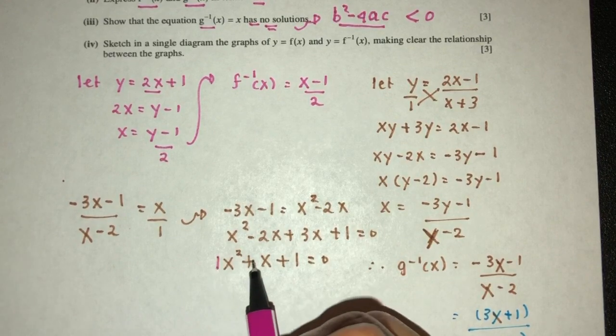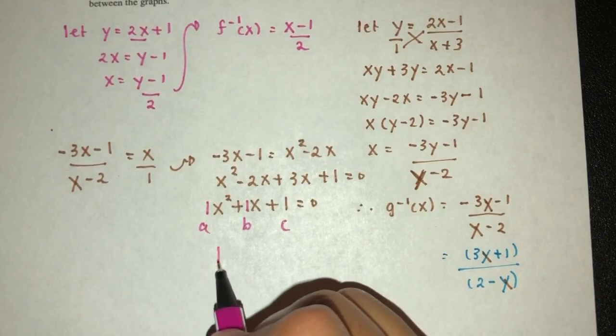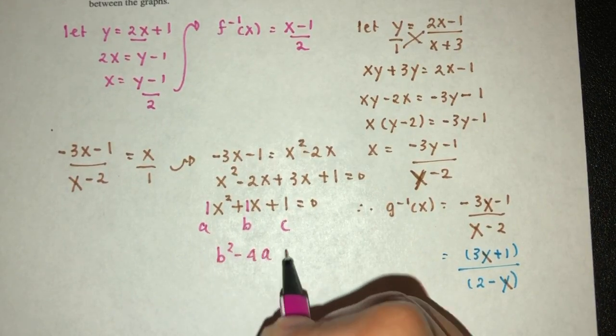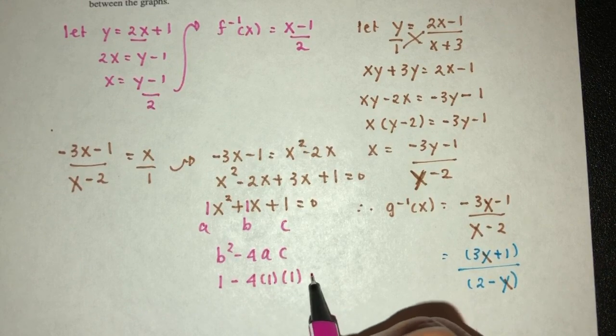That should be 1 here, 1 here. Now this is the value of a, b, and c. So let's find out what is b squared minus 4ac. b squared minus 4ac. b squared is 1, minus 4 times 1, times c.